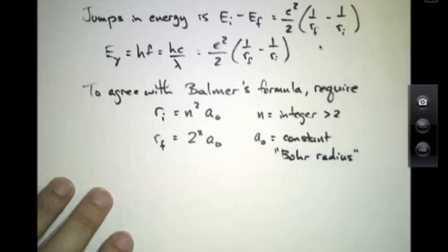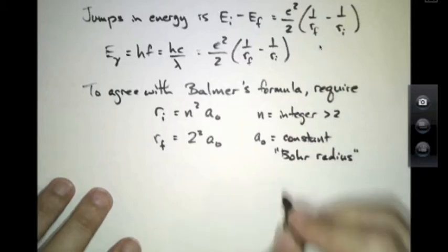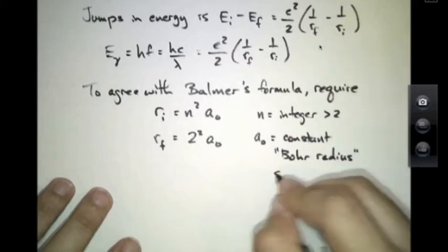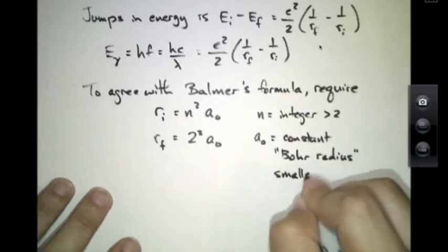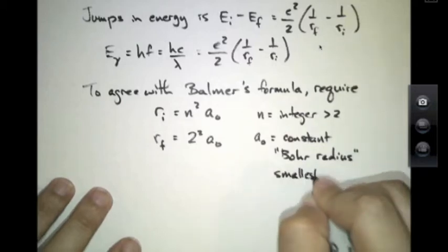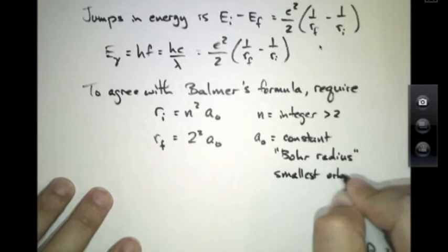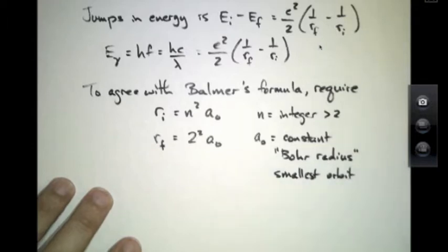We'll see in a moment that this Bohr radius has some physical significance. For now, it is the radius of the smallest orbit.